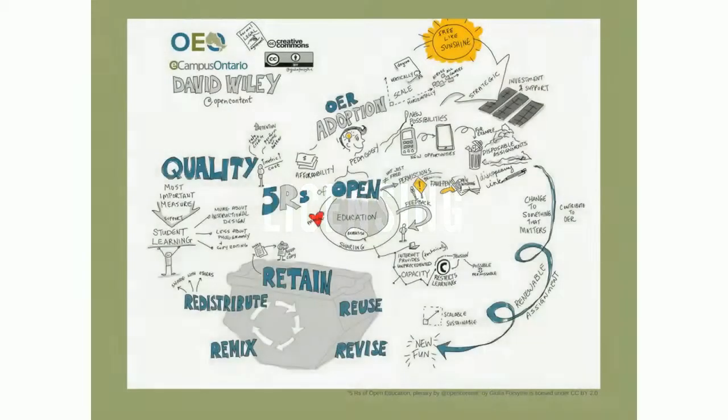Another element of OER is that of licensing. Since OERs are part of the open access movement, open typically refers to a resource that is freely available for use by someone other than the creator. David Wiley, the chief academic officer of Lumen Learning, discusses OER in terms of the five rights, or five R's: retain, revise, remix, redistribute, and reuse. These R's represent the different ways in which open materials can be utilized. In Wiley's opinion, a resource is not truly open unless it is free and gives you permission to engage in the five R's.